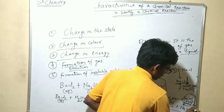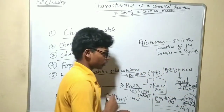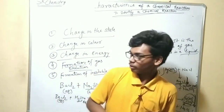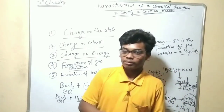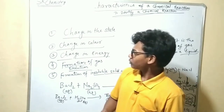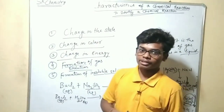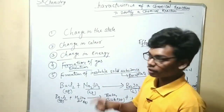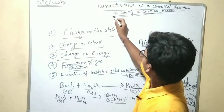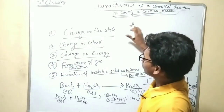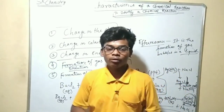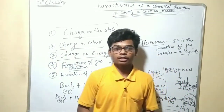To summarize, we can observe five types of changes in a chemical reaction: change in state, change in color, change in energy, evolution of gas, and formation of precipitate. By observing these changes we can identify a particular process as a chemical reaction. Thank you.